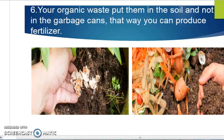The sixth method to save the environment is to use organic waste as a fertilizer. Make compost and use it to grow plants instead of throwing it away as litter. If we use organic waste as a fertilizer, it can also save the environment.